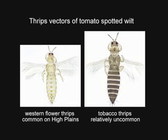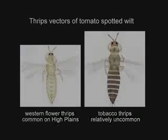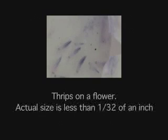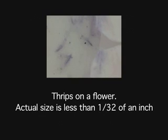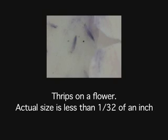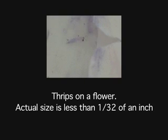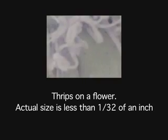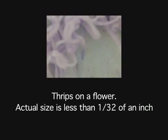By and large in west Texas, we do not have tobacco thrips as a vector of the specific disease that we see, which is tomato spotted wilt virus. Western flower thrips are apparently a very poor vector of it, and they make up the greater amount of thrips populations here in west Texas.